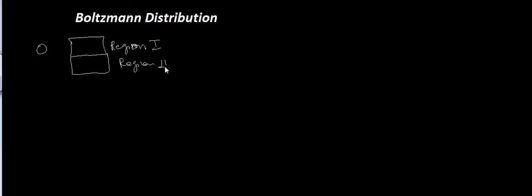In this tutorial, we will talk about the Boltzmann distribution. Suppose we have a particle and there are two regions: region one and region two. The particle might have higher interaction in region two as compared to region one.